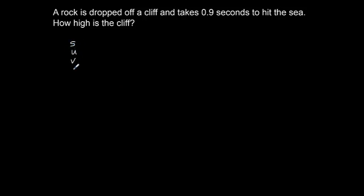Well, the first thing to do with any SUVAT question is to write out SUVAT: S, U, V, A, T. And now we need to assign values to these five unknowns. So S is what we're trying to find out, the displacement from where the rock is dropped to the bottom of the cliff. That would be the height of the cliff, so that is what we're looking for.